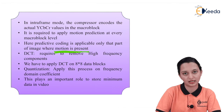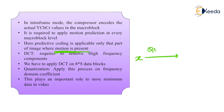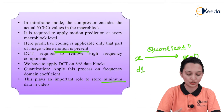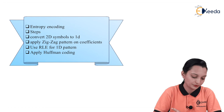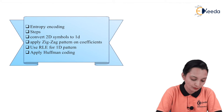Through quantization, actual reduction in data size takes place. If the previous data was X, after quantization the data becomes X minus N. If we required D1 storage space to store X, we will only require D1 minus N to store X minus N. This is the advantage of compression — storing minimum data. After this, entropy encoding steps are applied: convert 2D symbols into 1D, apply zigzag pattern on coefficients, use RLE for the 1D pattern, and apply Huffman coding.